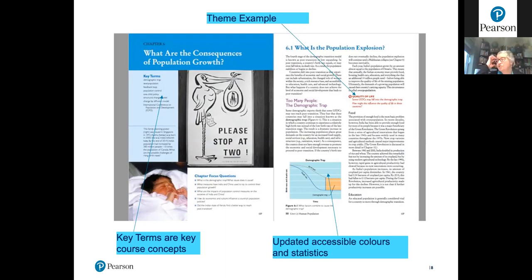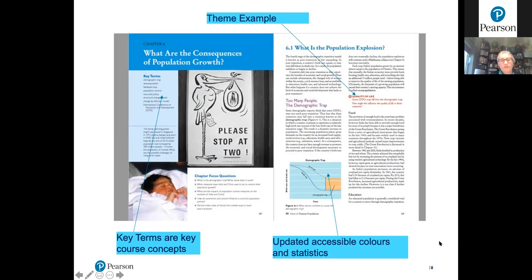Looking at book design, the themes are embedded throughout in a very overt way. Pull-out quotes from the narrative are color-coded by theme: an orangey-red color for quality of life, green for sustainability, and blue for globalization. Small icons using the letters Q, S, and G also appear alongside activities and end-of-chapter questions so teachers and students can quickly identify which theme a particular question or activity relates to.